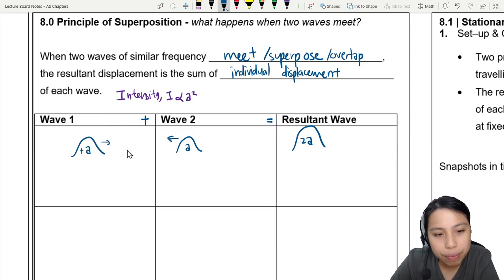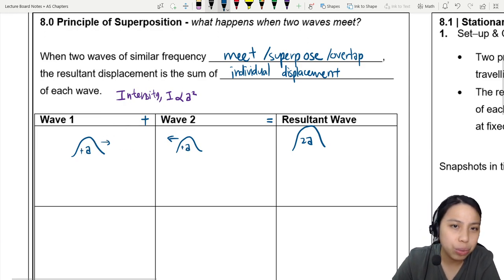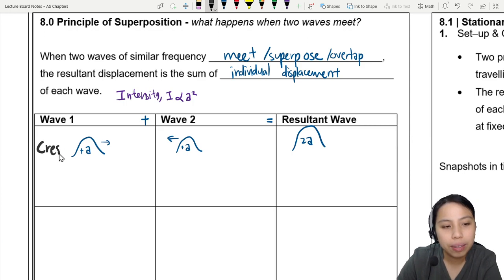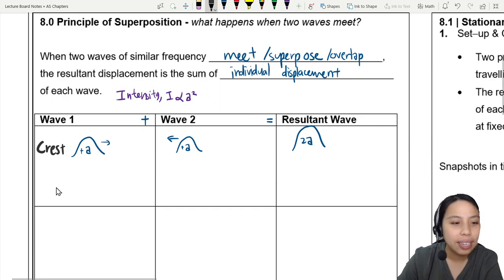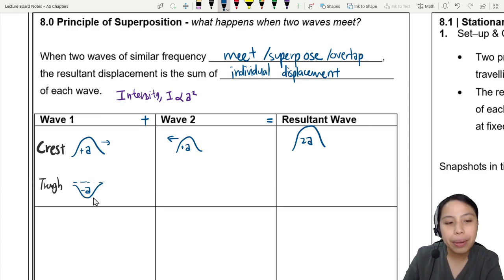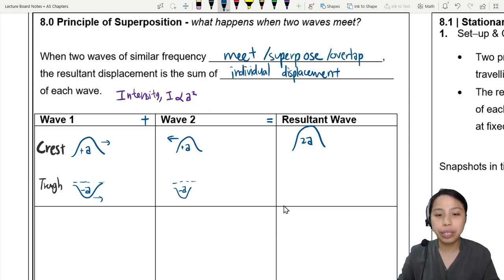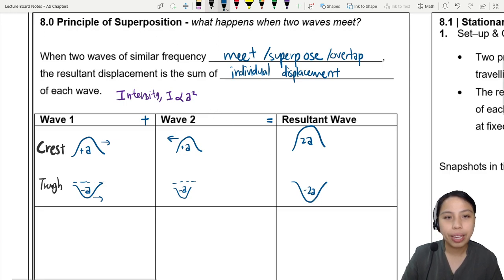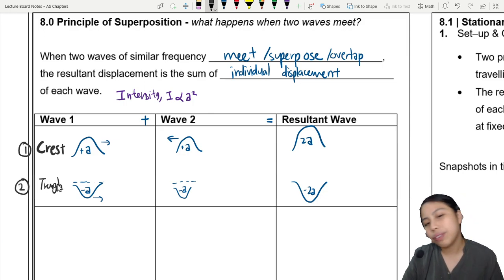The same thing can also happen if it is upside down. So this is what we call a crest. This is a very big highlighter. What if we have a trough? Actually, I don't know how to pronounce this. Trough. Let's call this a trough in negative A, the valley. What happens when a valley meets another valley?